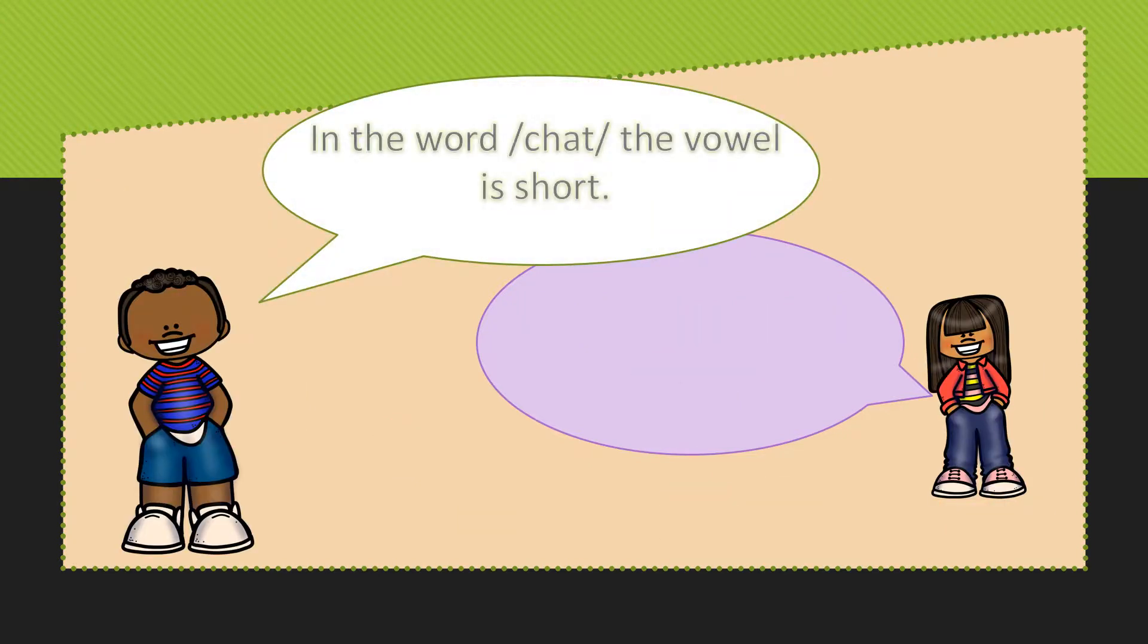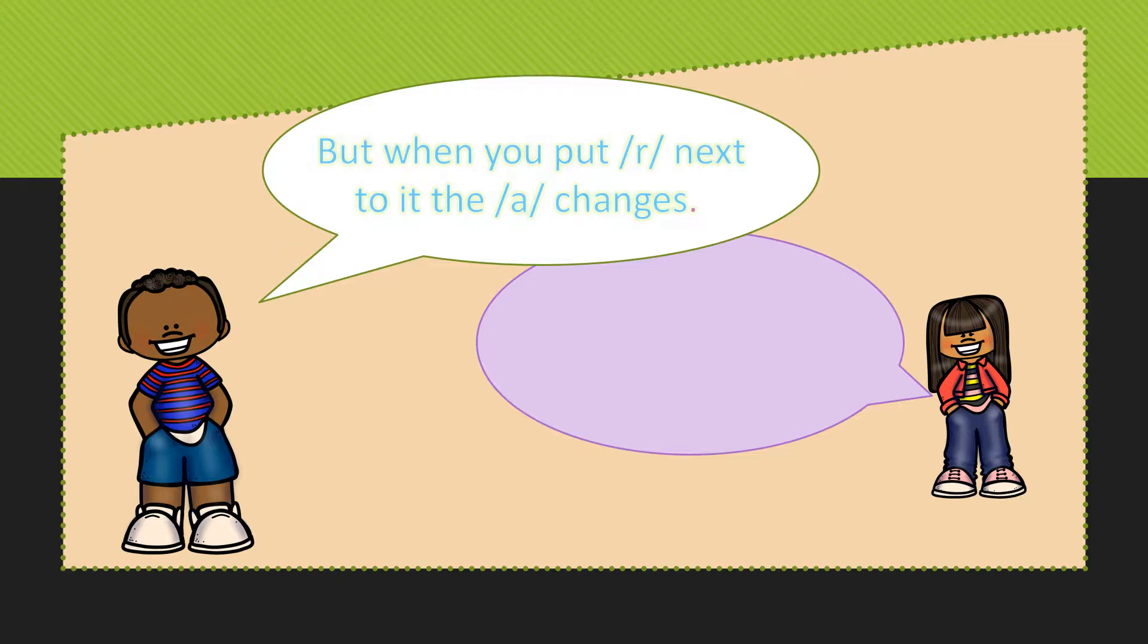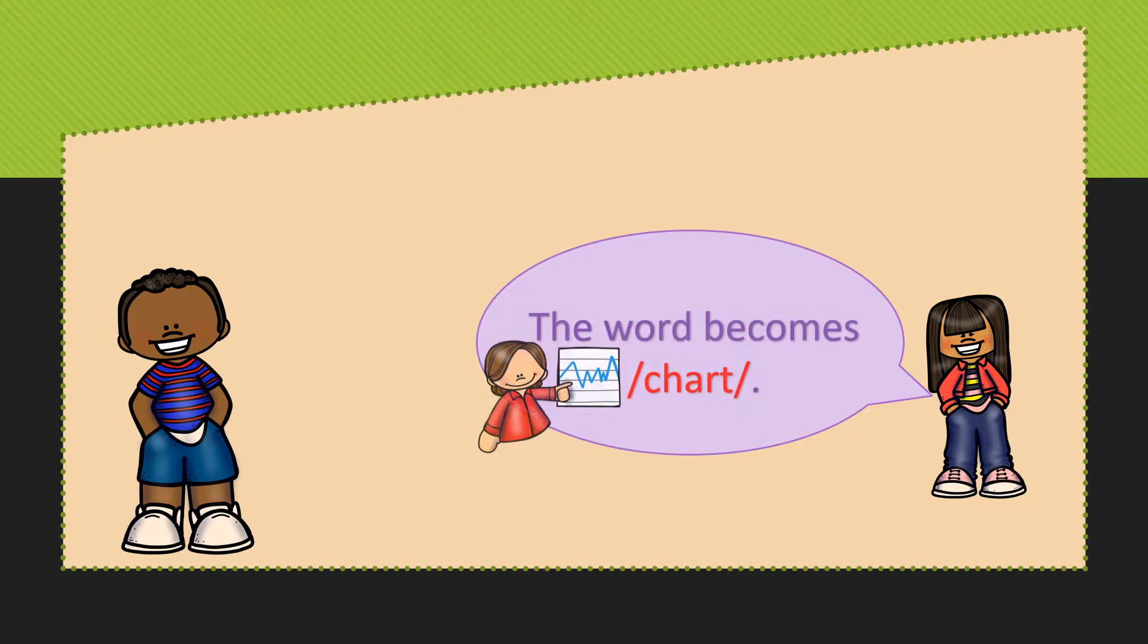In the word chat, it's a closed syllable and the vowel is short. When you add an R, the A changes its sound and chat becomes chart.